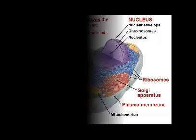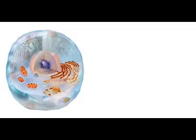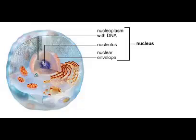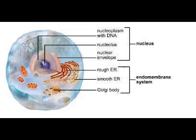Starting with the nucleus, the nuclear membrane separates the DNA from the cytoplasm. The endomembrane system processes proteins specified by genes in the DNA. These organelles will synthesize, sort, and ship newly made proteins to be used in the cell like an enzyme, or secreted out of the cell like a hormone. The process of synthesizing proteins starts in the nucleus.